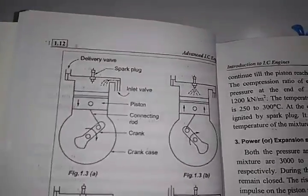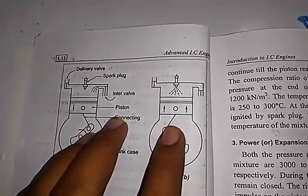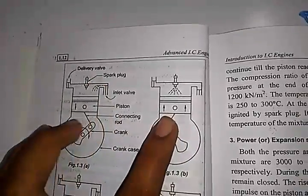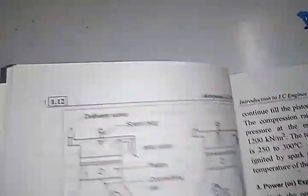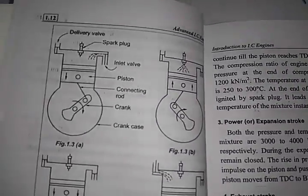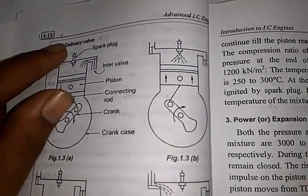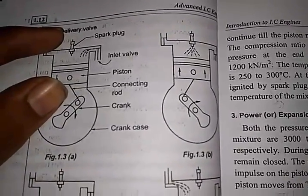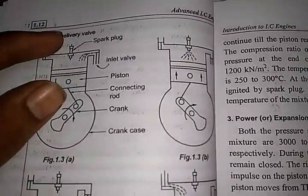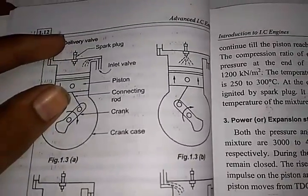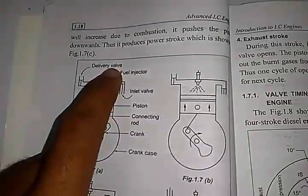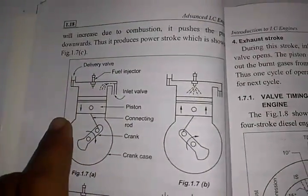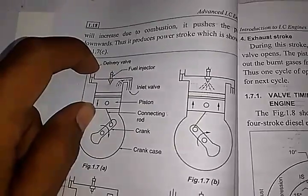The diagram of the four-stroke diesel engine is similar to the four-stroke petrol engine. The only difference is the presence of a spark plug in the petrol engine versus a fuel injector in the diesel engine, and the variation in cylinder size — the cylinder size of the petrol engine is smaller than that of the diesel engine. Here we can see the four-stroke diesel engine, showing the fuel injector and the larger cylinder size.